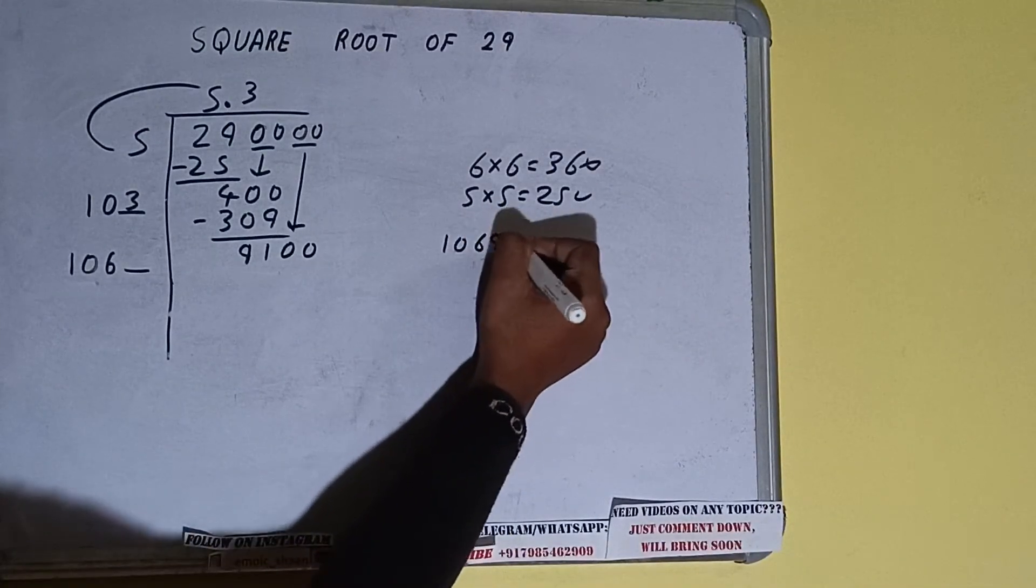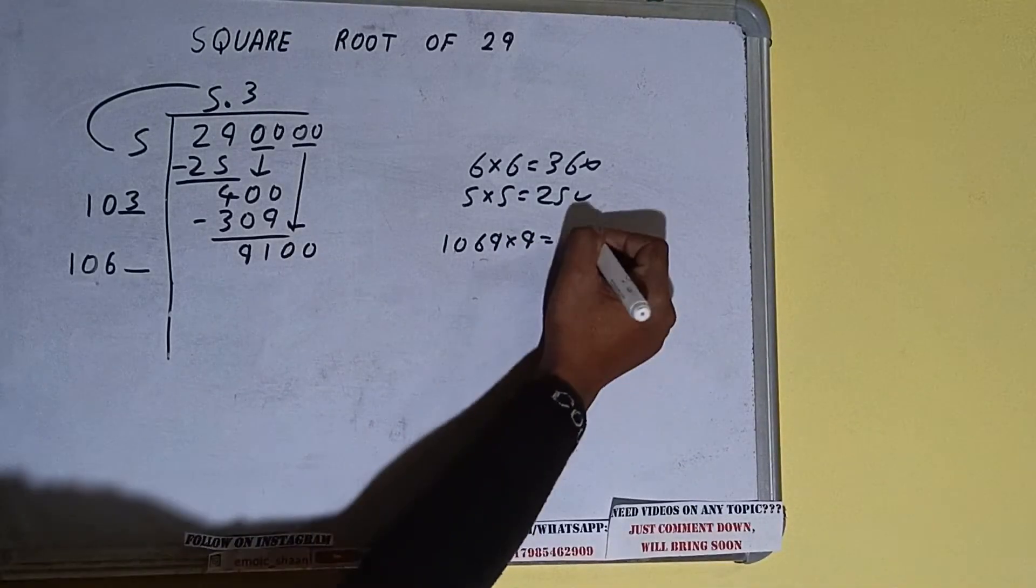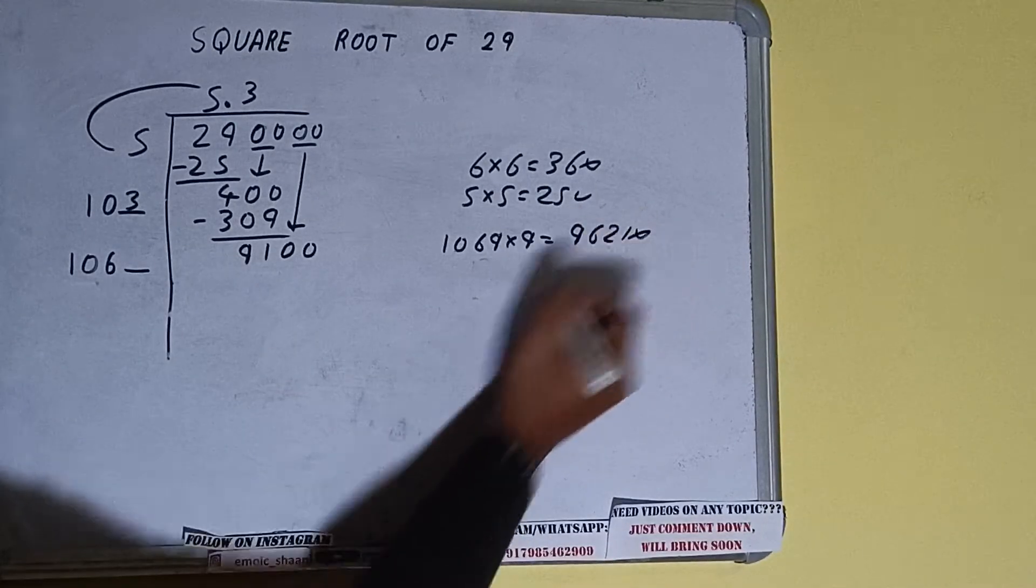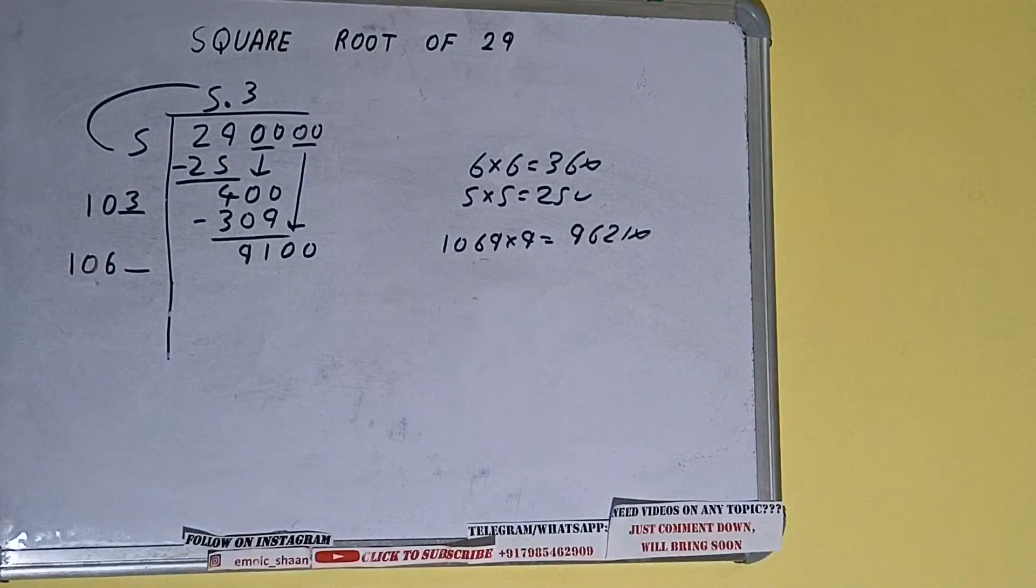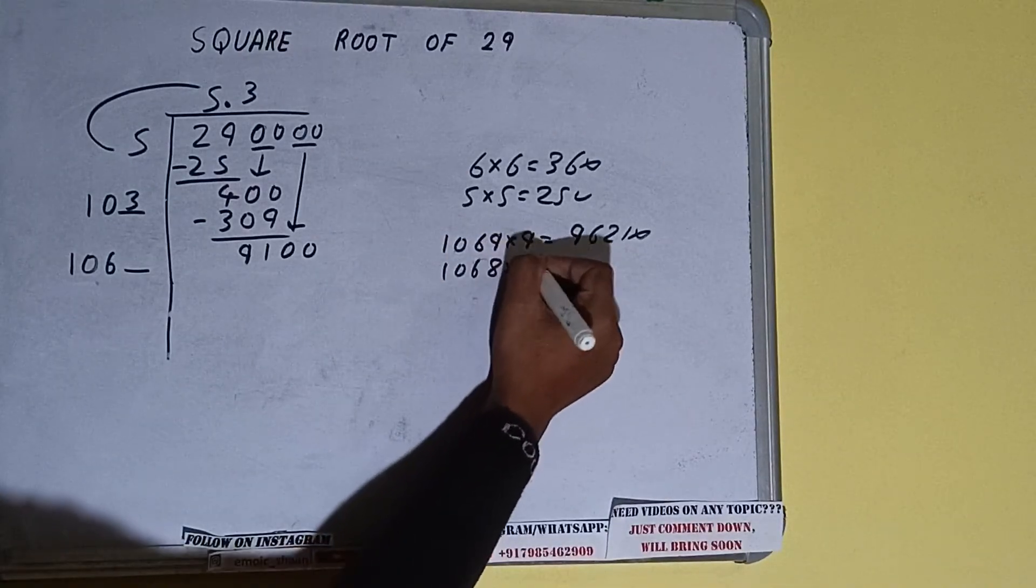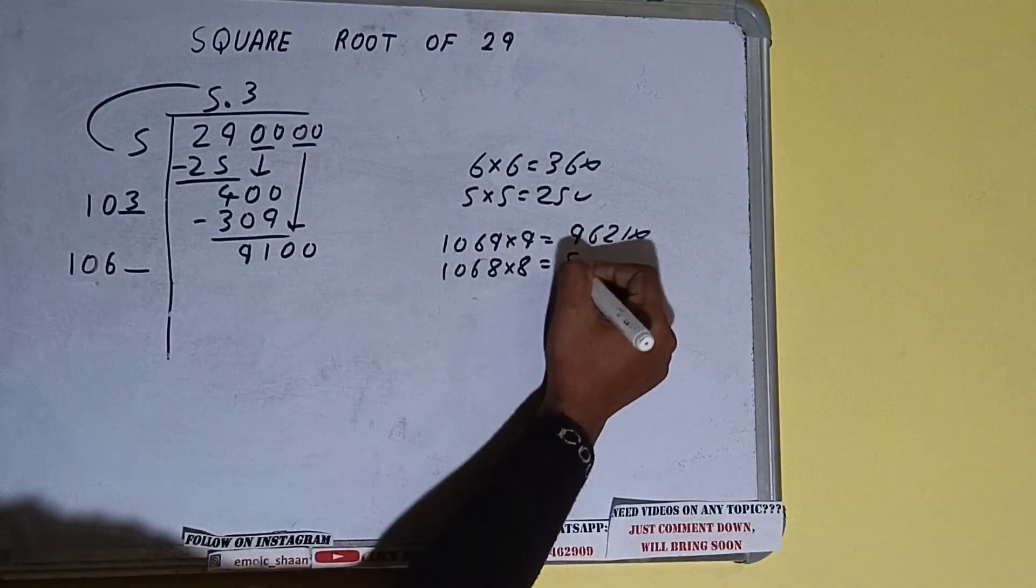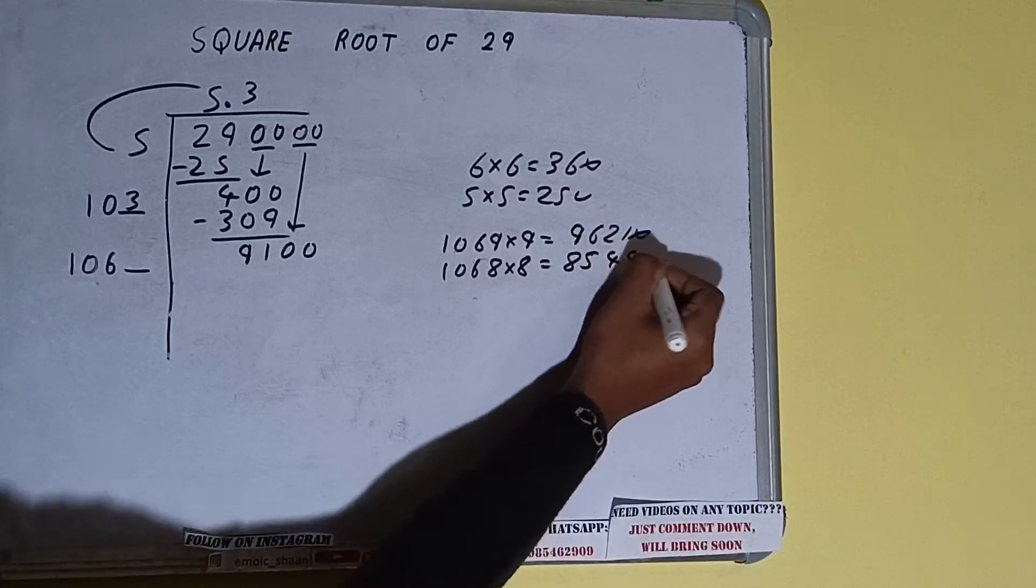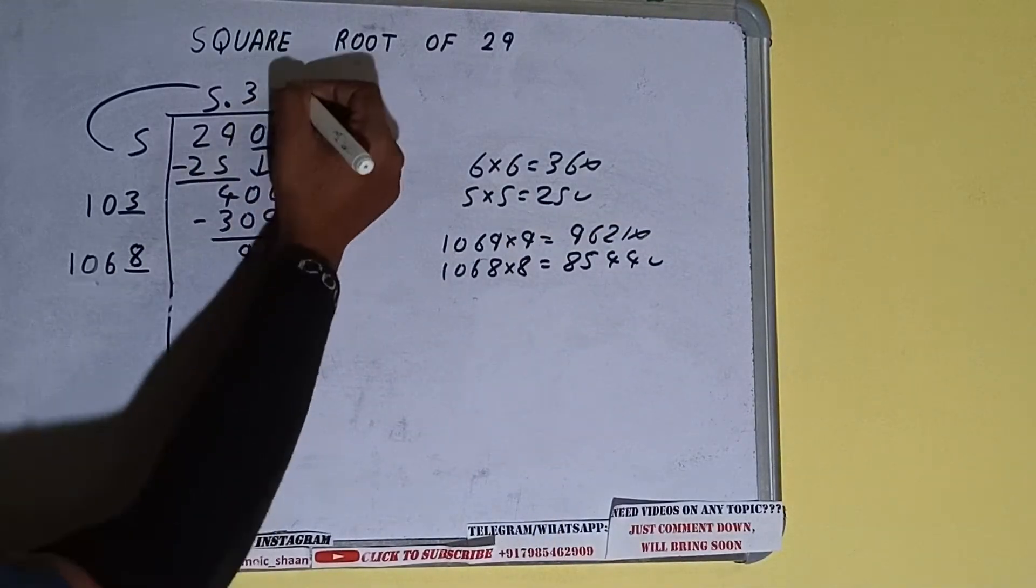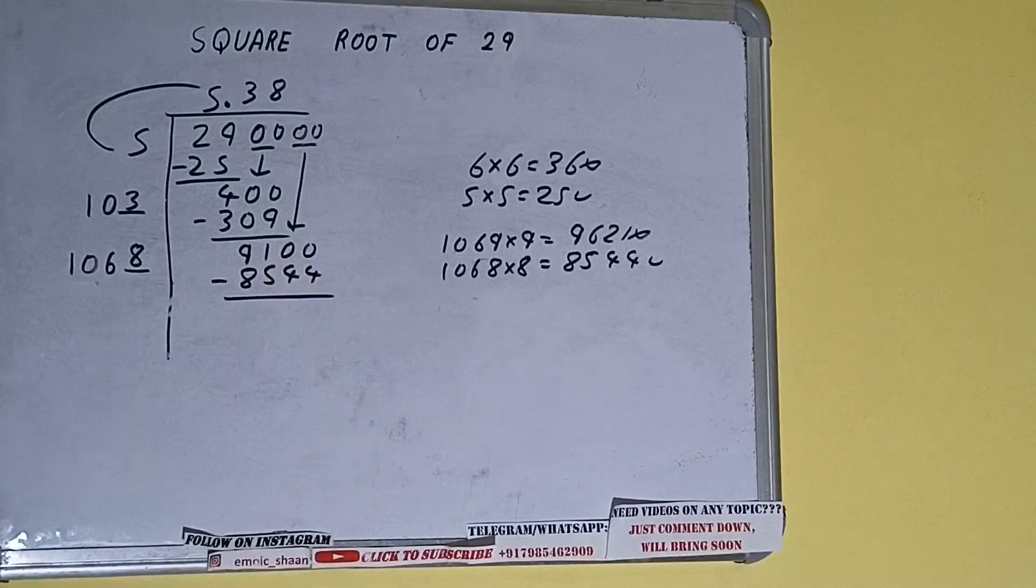106, 9 into 9 we can try. It will be 9621 which is bigger than 9100 so we cannot use it. Let's try 8 times. 106, 8 into 8 we can try. It will be 8544 which is good to take. So 8 here and 8 here, 8544, subtract it.